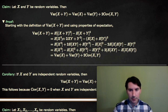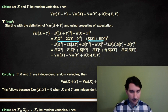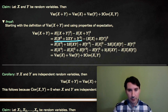To evaluate this, we're going to first square the inside of the first expected value. This gives us X squared plus 2XY plus Y squared. Then we're going to use linearity on both expected values. So E of X squared plus 2XY plus Y squared is E of X squared plus 2E of XY plus E of Y squared.